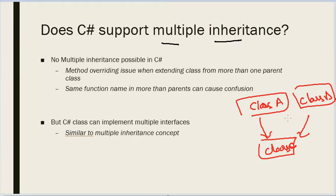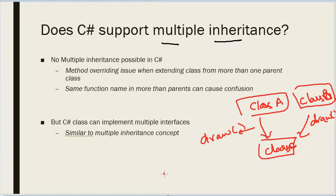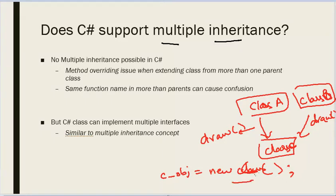Of course, theoretically it is possible, but in C# it is not possible. The reason is, let's say there is an abstract class A with a function draw, and there's another class B with the same function draw. So if class C extends from both A and B — that is, if A and B are both parents of class C — then if we create an object of C, the compiler does not know which draw function to be called: is it the draw function in parent class A or in parent class B? That's why it just adds too much complexity, and that's why the C# compiler does not support multiple inheritance.